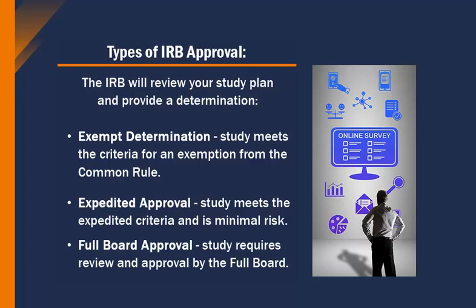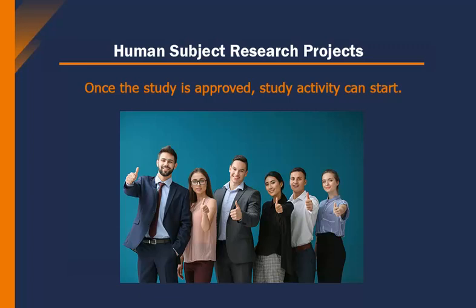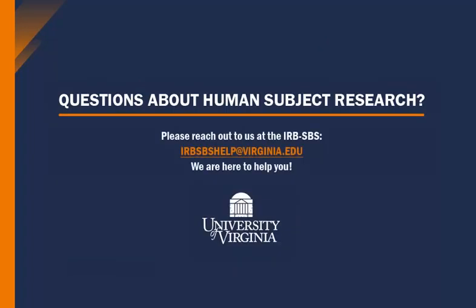As the investigator, it's important to document your study activities clearly in the study protocol so that the IRB can appropriately review what will happen in the study. It's also important to know what type of approval or determination the IRB granted as the outcome for your study. Once the IRB has approved the study protocol for your human subject research project, study activity can start. If you have questions about human subject research or if you need help making a determination, please reach out to us — we're here to help you.